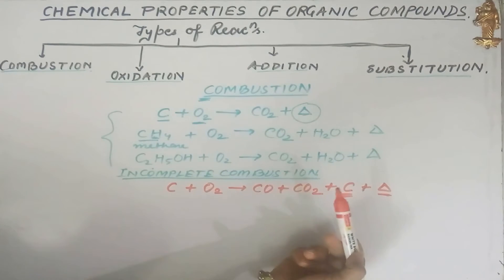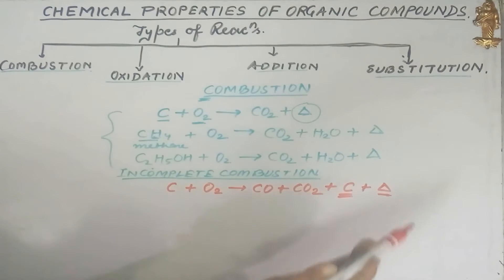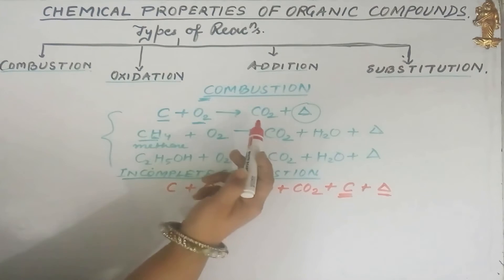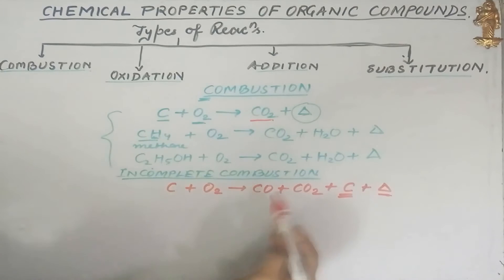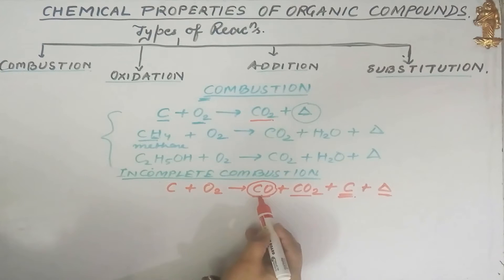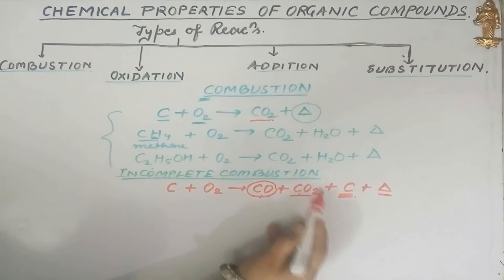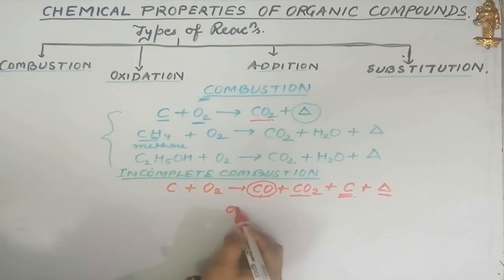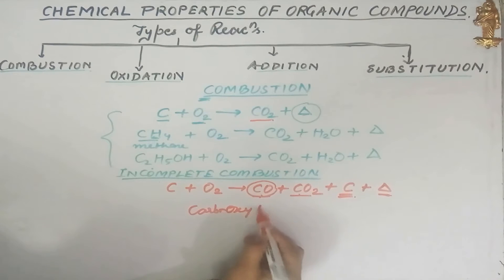Complete combustion involves more heat and gives out only carbon dioxide, whereas incomplete combustion gives out carbon monoxide, carbon dioxide, and carbon black. Carbon monoxide is considered a poisonous gas — more harmful than carbon dioxide, which is responsible for global warming. Carbon monoxide is very poisonous because it attaches itself to hemoglobin to form carboxyhemoglobin.